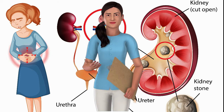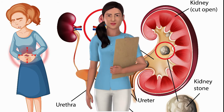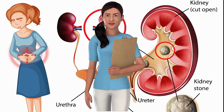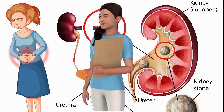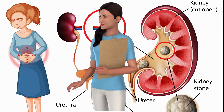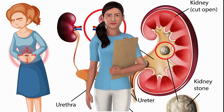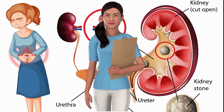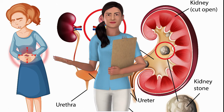Uric acid stones tend to mostly occur in men who are either undergoing chemotherapy or who have gout. They develop when the urine contains too much acid, which can occur through a purine-enriched diet, so you should limit foods such as shellfish and meats.